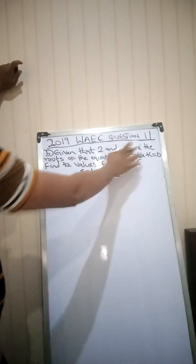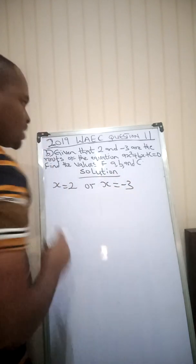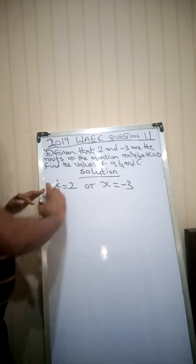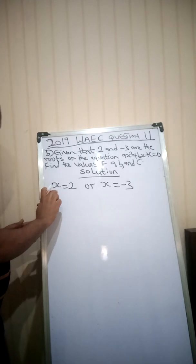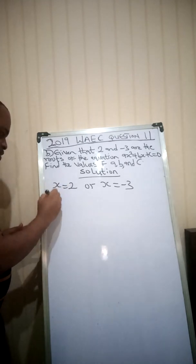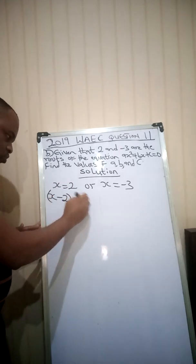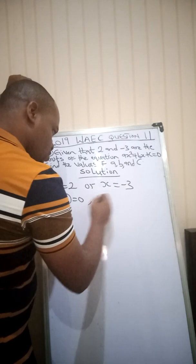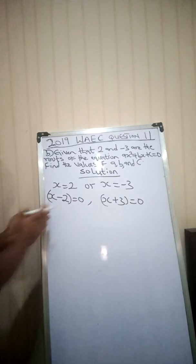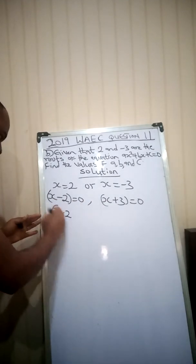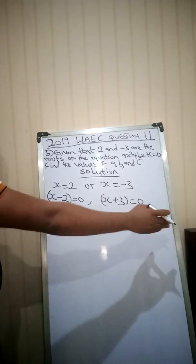These are the roots, meaning x = 2 or x = -3. They want you to bring it back to an equation. Take each root to the other side: when positive, crossing the equality gives x - 2 = 0; the other gives x + 3 = 0. Combining them: (x - 2)(x + 3) = 0.